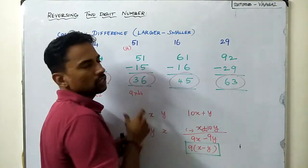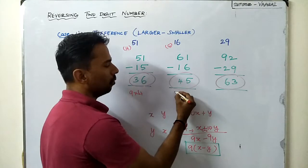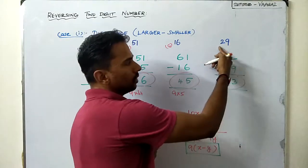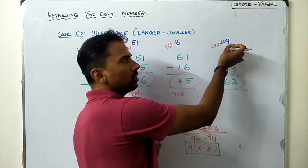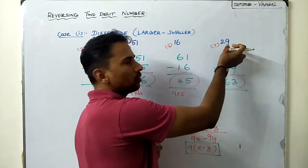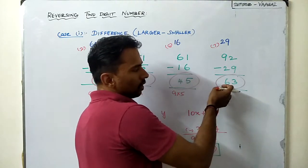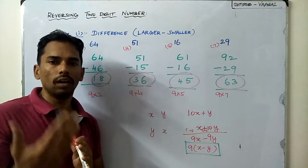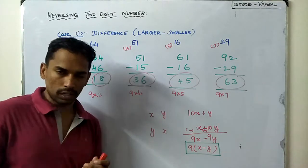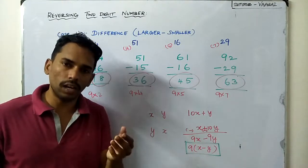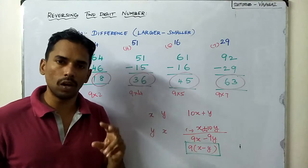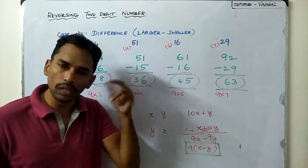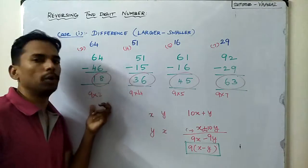For 16, the digits are 1 and 6, and the difference is 5. So 9 times 5 is 45 — correct. For 29, the digits are 2 and 9, and the digit difference (bigger minus smaller) is 7. So 9 times 7 is 63 — also verified. Whenever you take a two-digit number, reverse it, and subtract, you always get a multiple of 9; specifically, 9 times the difference between the two digits.